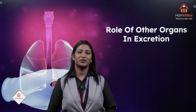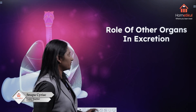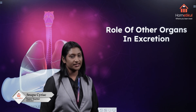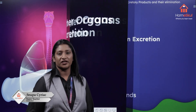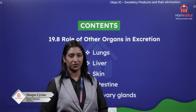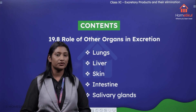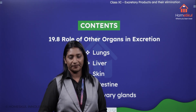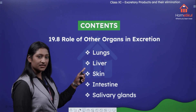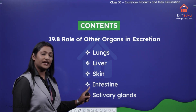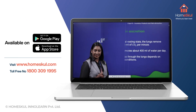Hi everyone, welcome to the class. In this session, we are going to discuss about the role of other organs in excretion. We will discuss about the kidney and its functions, how nitrogenous waste materials are released out through the kidney. We will also discuss about lungs, liver, skin, intestine and salivary glands and their role in excretion.